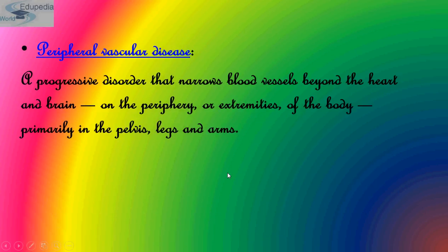Peripheral vascular disease is a progressive disorder that narrows blood vessels beyond the heart and brain, on the periphery or extremities of the body — especially in the pelvic region, legs, and arms. These were the disorders of the heart and blood-related disorders. Thank you, and keep watching Edipedia World videos.